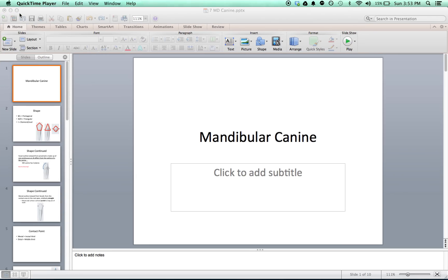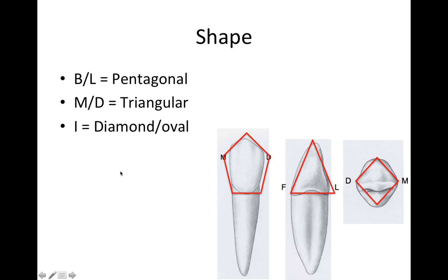This video is about the mandibular canine. First we'll go over the shape of the tooth. From a buccal or lingual view the tooth is going to be shaped like a pentagon. From a mesial-distal view it's going to be triangular, and from an incisal view it's going to be shaped like a diamond, or you might see it described as being oval.